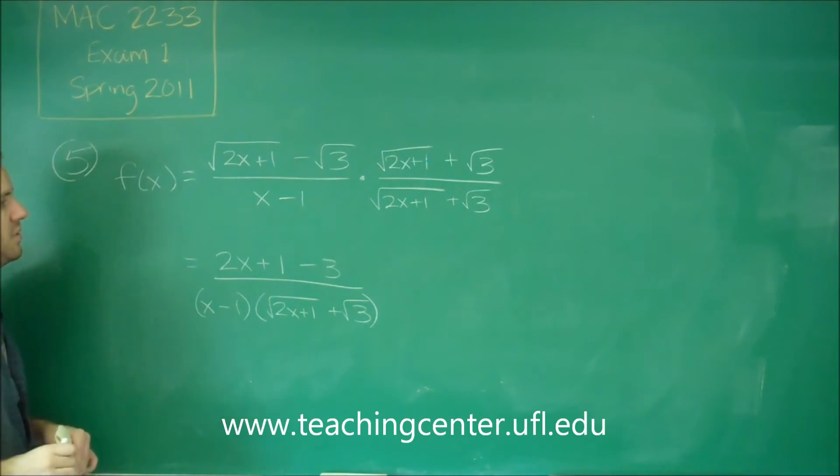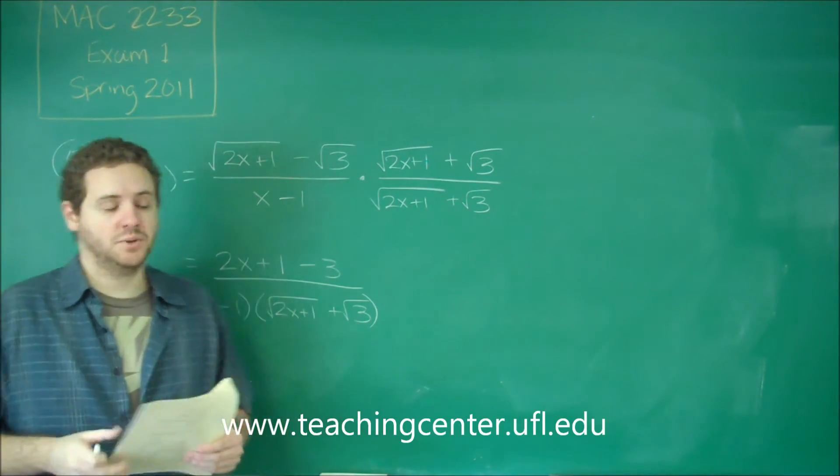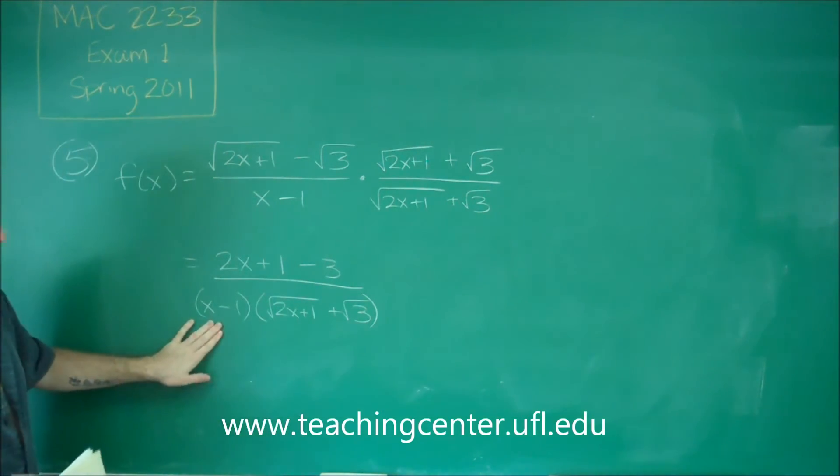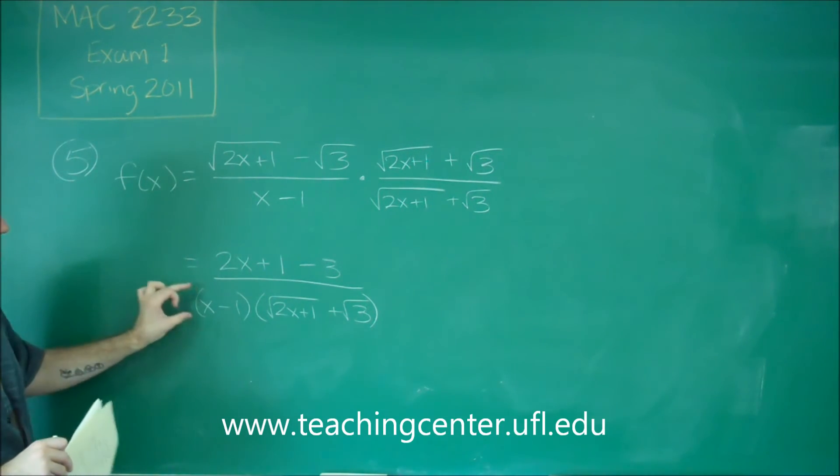Remember that the problem with trying to plug in 1, which is eventually what you want to do, is that you have this x minus 1 down here on the bottom because that's making it 0. So your objective here is try to cancel this out.